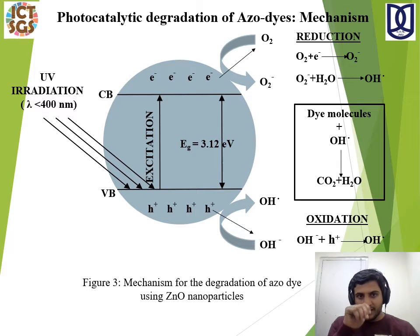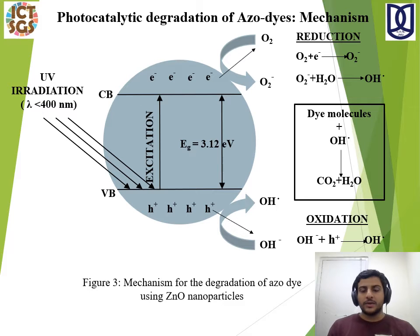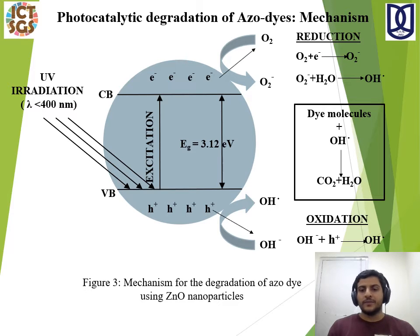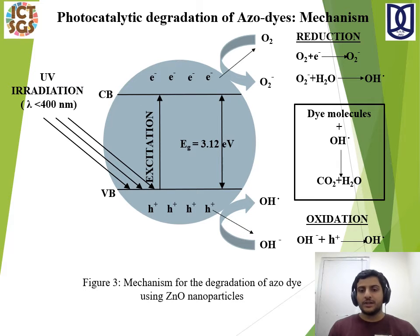This is the basic photocatalytic degradation mechanism. Due to irradiation of light, electrons get excited and electron-hole pairs are formed. Together, the electrons and holes cause reactions on the surface. When the dye molecule is attached to the surface of the nanoparticle, these electrons and holes drive redox reactions. An electron is transferred and OH radicals are produced, which further cause a chain reaction in the organic molecule, degrading the dye over a period of time.